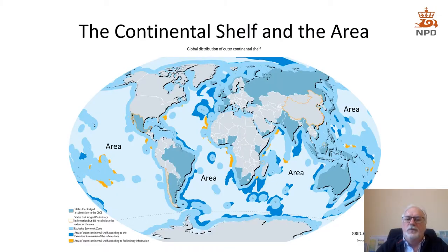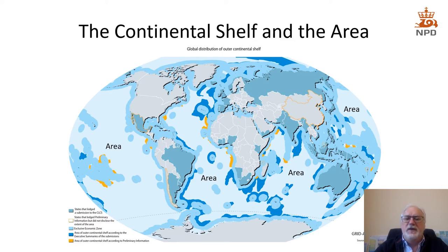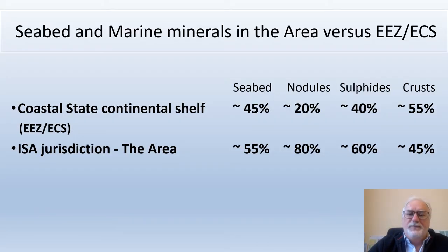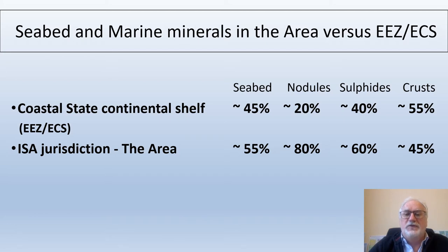From the legal point of view, all ocean is divided into two parts. The first is the exclusive economic zone, which is under national jurisdiction of the coastal state. The second, so-called 'the area,' is the part of the ocean beyond national jurisdiction. Any activity at the seafloor of the area is governed by the International Seabed Authority. Statistically, less than half of the seabed is controlled by coastal states within their exclusive economic zone and extended continental shelf, and another half — or a bit more, 55 percent — is controlled by the International Seabed Authority.